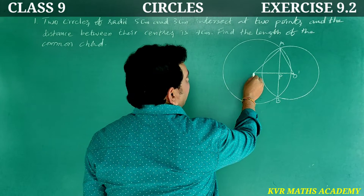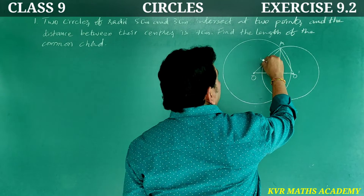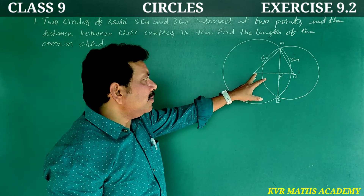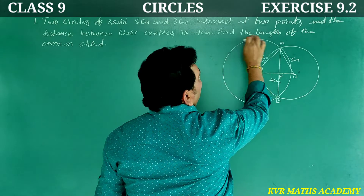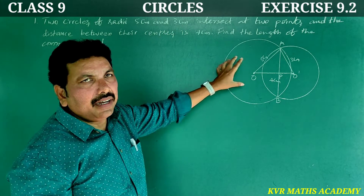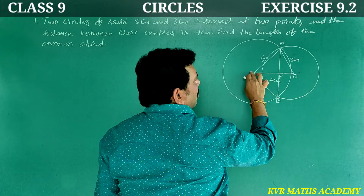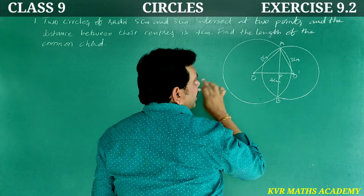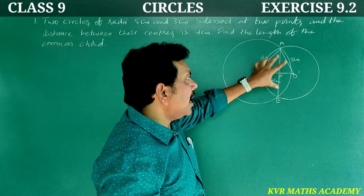Two circles of different radii — 5 cm and 3 cm — intersect at 2 points. The distance between the two centers O and O' is equal to 4 cm. We need to find the length of the common chord AB. According to the data, I have drawn the figure with two circles having centers O and O', with radii 5 cm and 3 cm respectively.